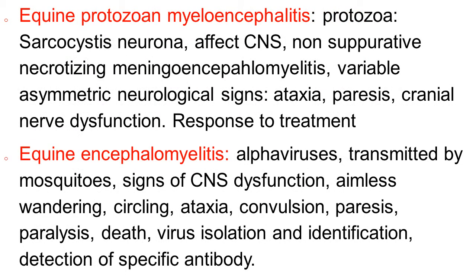Differential diagnosis of botulism in horses includes equine protozoal myeloencephalitis, caused by the protozoan Sarcocystis neurona. It affects the central nervous system, producing non-suppurative, necrotizing meningoencephalitis, and shows variable asymmetric neurological signs.